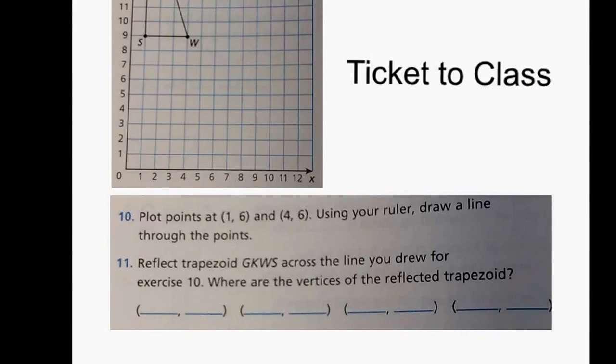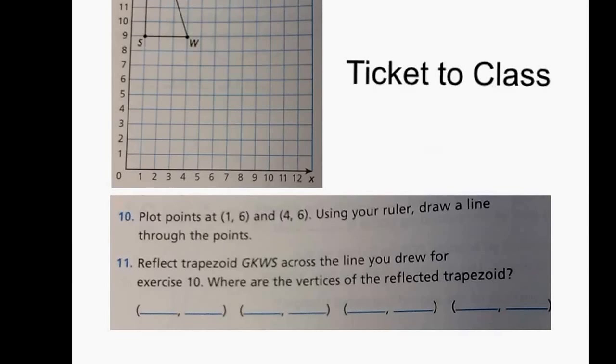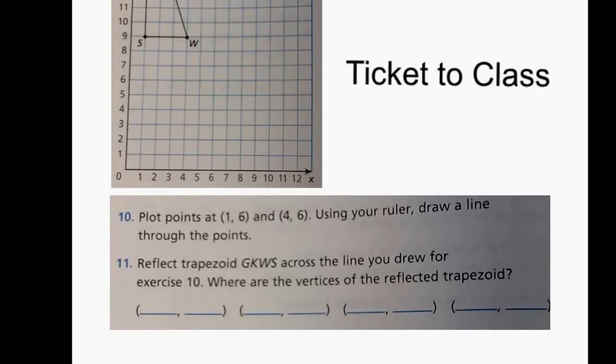Alright, then your ticket to class is to complete problems 10 and 11 on the same workbook page you were just doing 8 and 9 on. Notice that number 10, you're plotting the points of the line that you will be using to reflect the trapezoid. Number 11, then you actually do the work of plotting the reflected trapezoid, and then make sure that you record the ordered pairs of that reflected trapezoid.